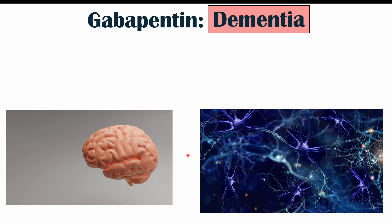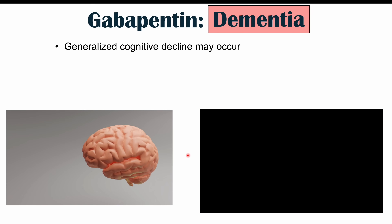Neurons that fire together wire together. If neurons aren't firing, we won't get more neuronal wiring. This is the theory as to why gabapentin leads to or increases the risk of dementia. It not only affects cognitive functioning broadly, but it can particularly affect memory.